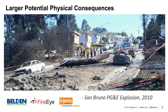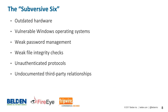We call this the Subversive Six. Here they are: outdated hardware, vulnerable Windows operating systems, weak password management, weak file integrity checks, unauthenticated protocols, and undocumented third-party relationships. As you socialize the concept of security within your organization, these are six concepts you can sit down and start to discuss — here's what these things mean, here are cases where adversaries or researchers have found problems that need to be addressed.